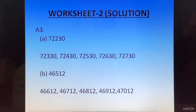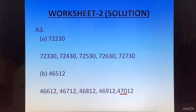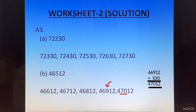In this particular case, the hundreds place was changing in the first 4 numbers. But in the 5th number, the thousands place as well as the hundreds place have changed — because when we add 100 to 46912, we get 47012.